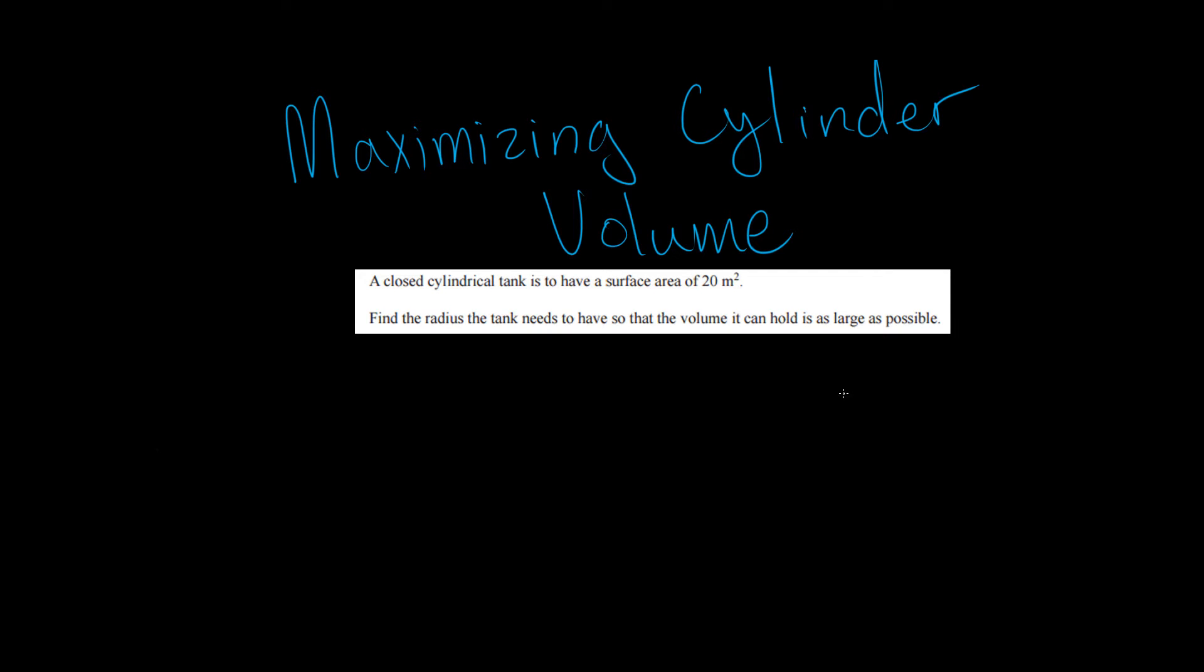Hey everyone, how's it going? In this video we're going to work through an example that involves maximizing the volume of a cylinder with a set surface area. The problem says a closed cylindrical tank is to have a surface area of 20 square meters. Find the radius the tank needs to have so that the volume it can hold is as large as possible.